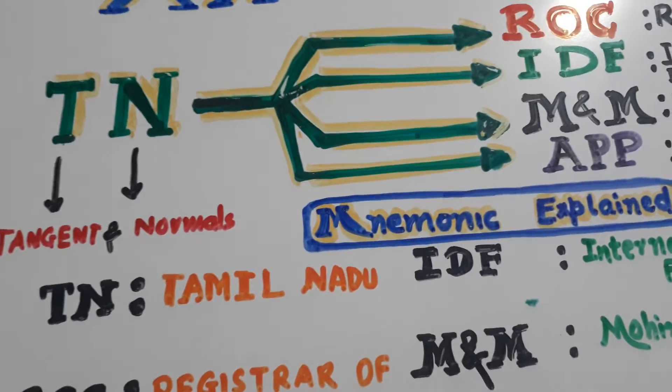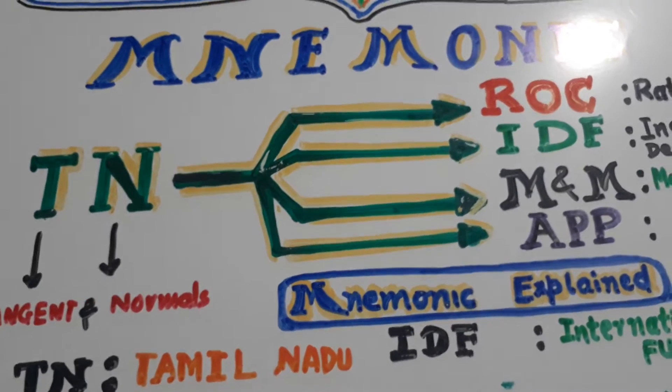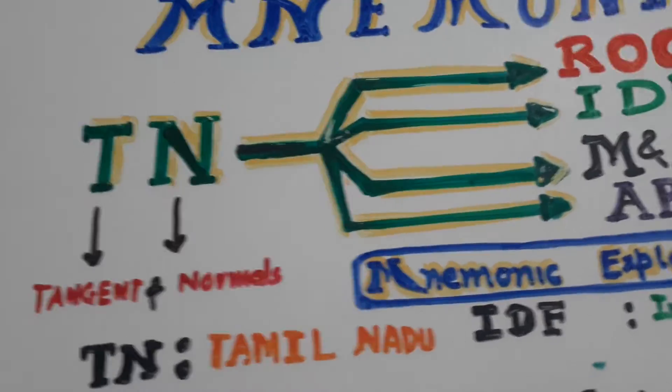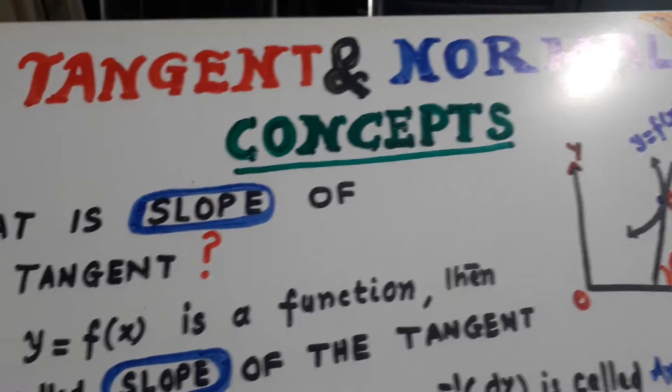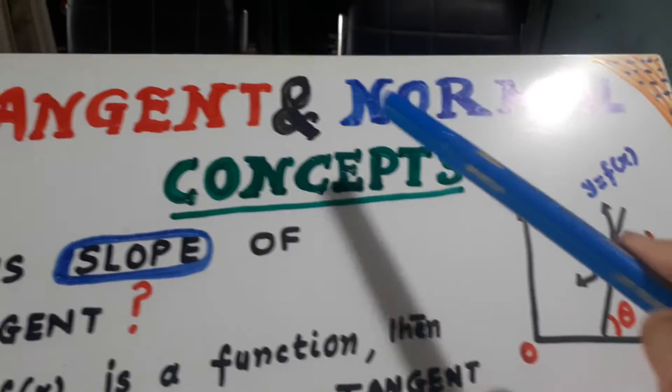So we shall be going ahead with one by one. I am starting with Tangents and Normals. So here is Tangents and Normals.